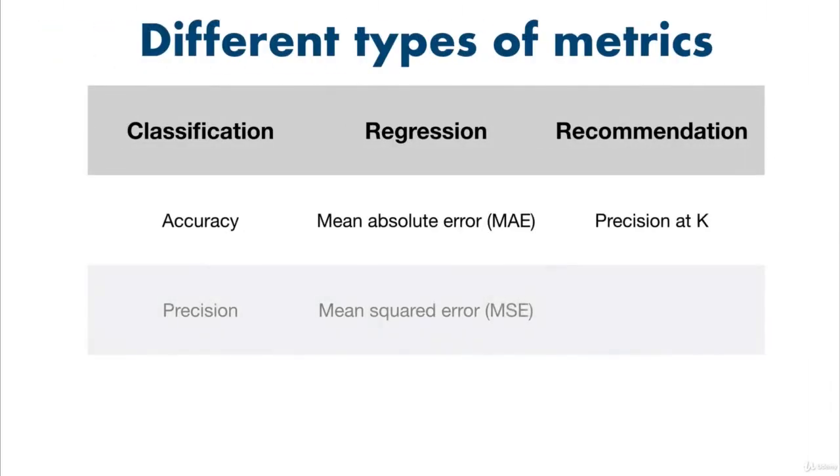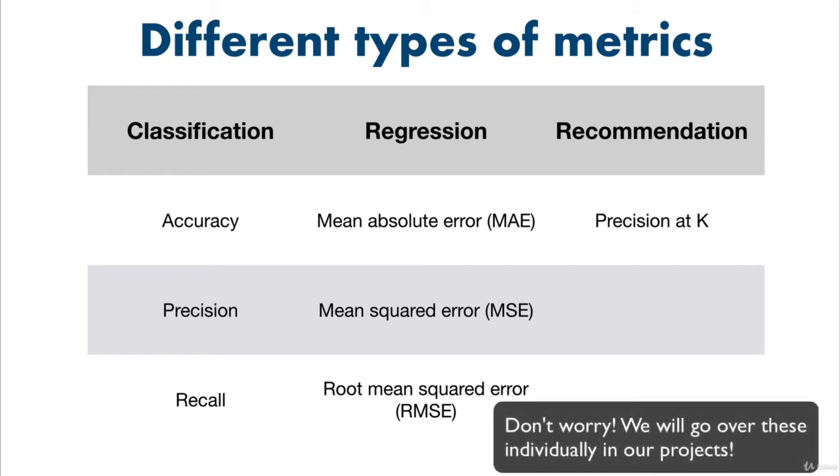As you could imagine, there are different evaluation metrics for different problems. For classification or predicting whether something is one thing or another, accuracy, precision, and recall are common. For regression or predicting a number, such as how much a car will sell for, you'll probably want to minimize how different the number your model predicts to the actual sale price. For this, mean absolute error and mean squared error are common options.